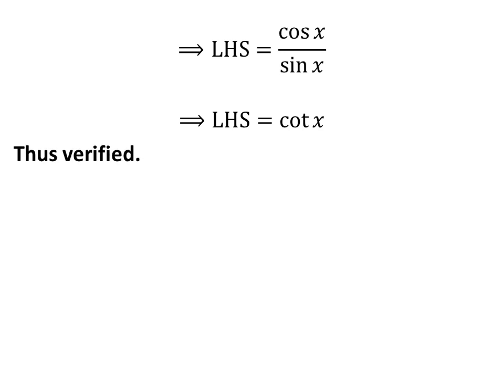Cosine of x upon sine of x is equal to cotangent of x. Thus, left-hand side of the identity is equal to right-hand side of the identity. Hence, verified the identity.